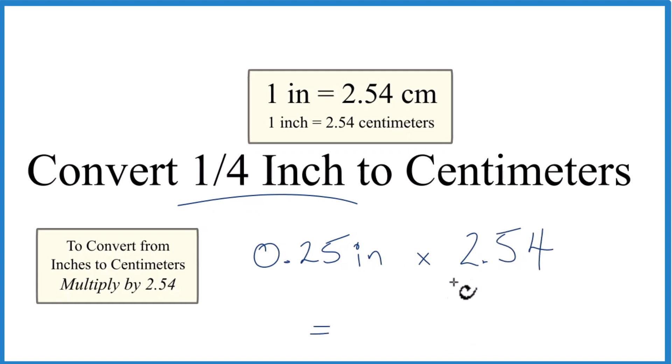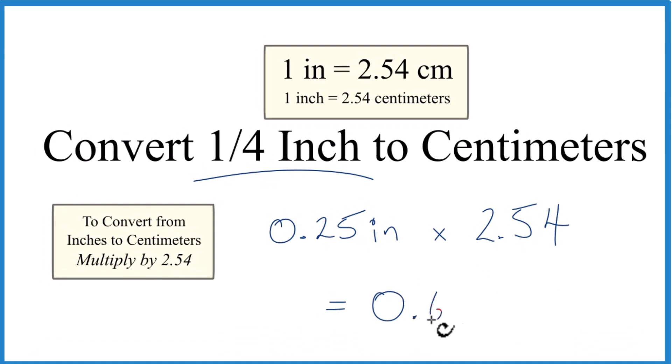0.25 times 2.54 gives us 0.635. We're going from inches to centimeters, so this is centimeters.